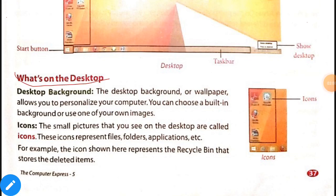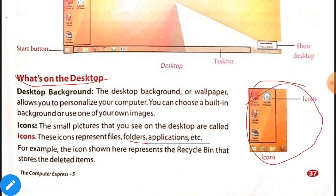What's on the desktop? First is the desktop background or wallpaper, which allows you to personalize your computer. You can choose a built-in background or use one of your own images. The small pictures that you see on the desktop are called icons. These icons represent files, folders, applications, etc. For example, the Recycle Bin icon stores deleted items.